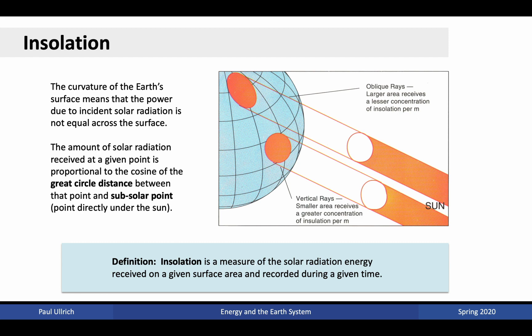The actual energy received at any time in watts per meter squared is by definition the insolation at that location. More formally, insolation is a measure of the amount of solar radiation energy received on a given surface area recorded during a given time. Some spots on the planet may instantaneously record 1,000 watts per meter squared, others 200 watts per meter squared, and the night side of the planet receives zero. The time period is relevant because it determines the averaging window for total insolation.